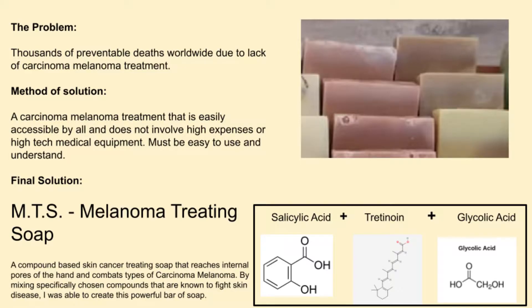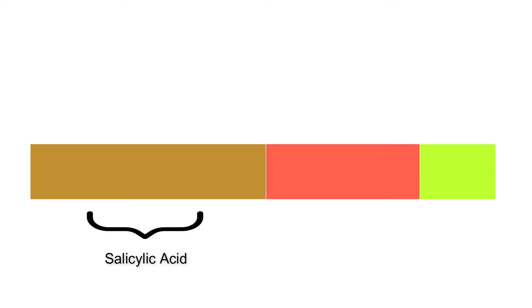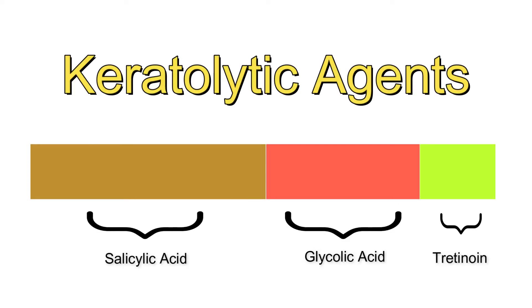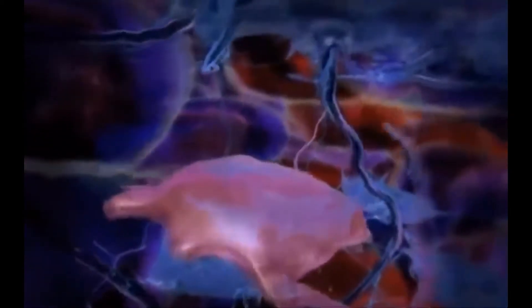This leads me to introduce MTS. I made this soap by fusing regular medicinal soap with a 50-30-20 ratio of salicylic acid, glycolic acid, and tretinoin, which are all keratolytic agents that slowly reactivate dendritic cells. After MTS is used, the soap releases toll-like receptors into your skin. These receptors latch onto dendritic cells, which reactivate them.